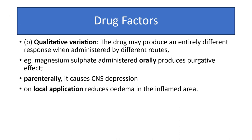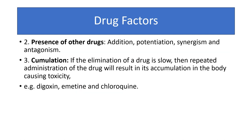Qualitative response: a drug can produce an entirely different response when administered by different routes. For example, magnesium sulfate administered orally produces a purgative effect; given intravenously, it produces CNS depression; and on local application, it reduces edema in the inflamed area.